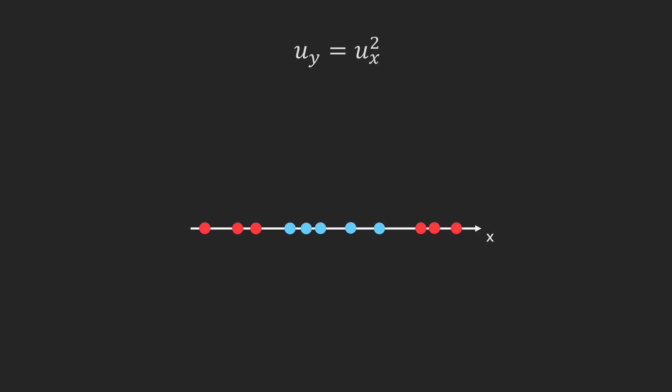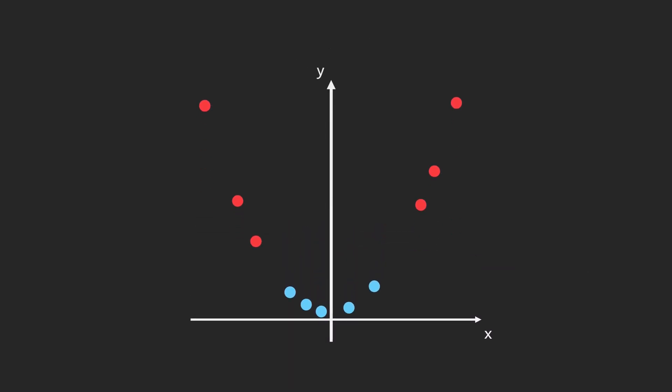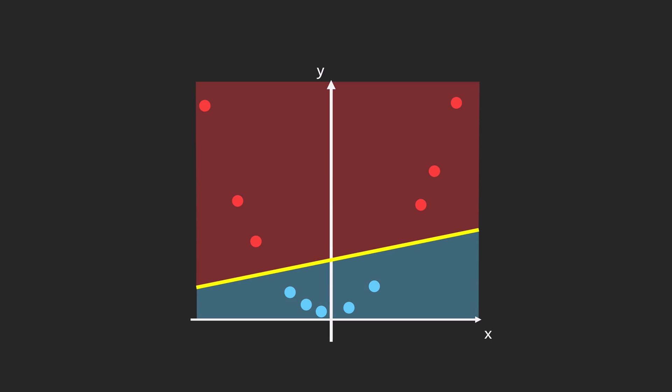Rearranging points leads us back to non-linear separation. Now we cannot use just one threshold. However, adding a new feature, such as the square of the original feature, can help. For instance, a point originally at 8 gains a second feature value of 64, which is 8 squared. Visualizing this updated dataset, we now see that the originally non-linearly separable data becomes linearly separable in a higher-dimensional space.